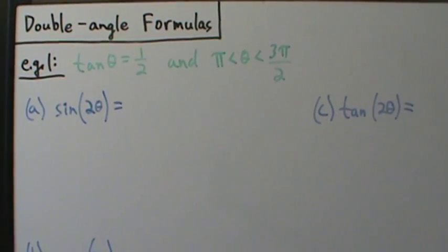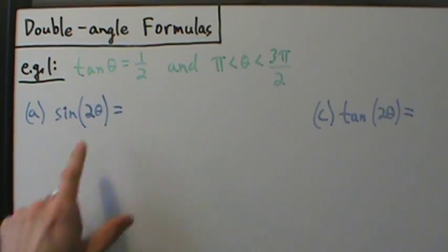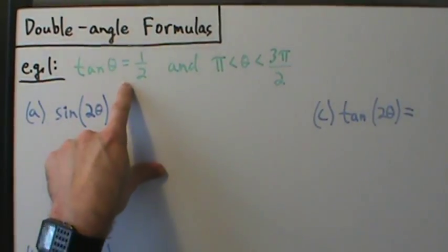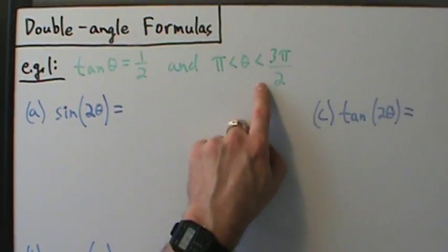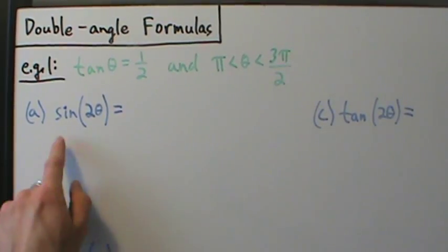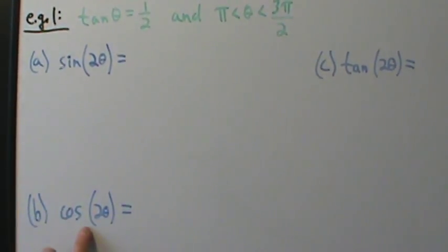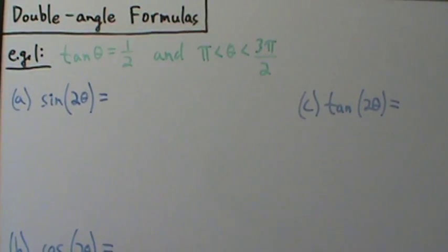Here's example one of using double angle formulas to evaluate trig expressions. We're given that the tangent of theta is 1/2 and theta is between pi and 3pi over 2. We have to figure out the sine of 2 theta, cosine of 2 theta, and the tangent of 2 theta.